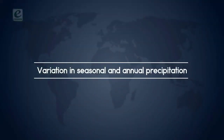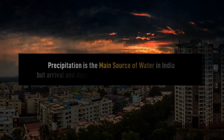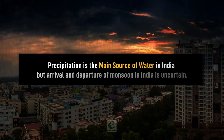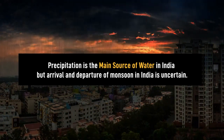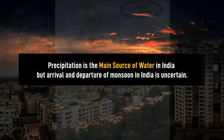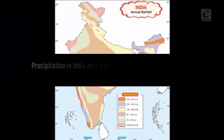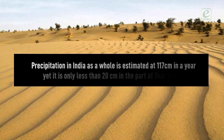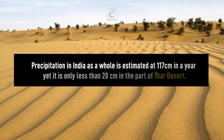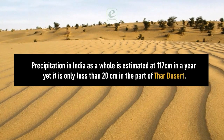Variation in seasonal and annual precipitation: precipitation is the main source of water in India, but the arrival and departure of the monsoon is uncertain. Though the average precipitation in India as a whole is estimated at 117 cm per year, it is only less than 20 cm in parts of the Thar Desert.